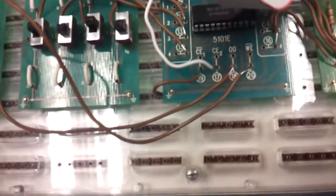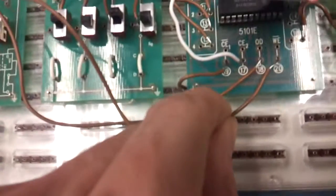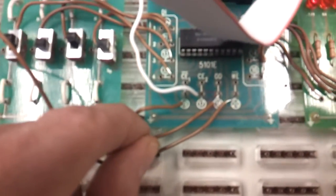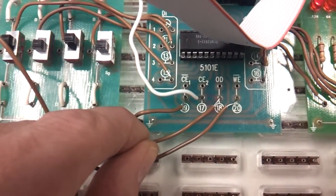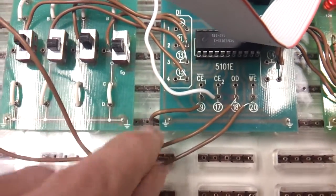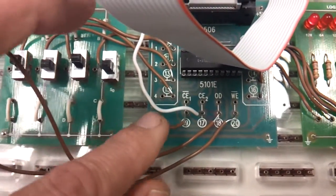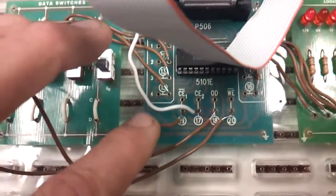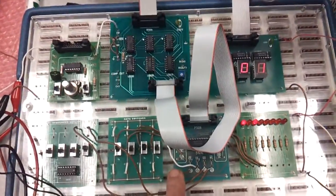And I also have some debounce data switches connected to the control pins. NOT WE is write enable, active low. OD is output disable, active high. And I've just forced the RAM chip into chip enable as this is the only device on the bus right now, so I'm just leaving it enabled.